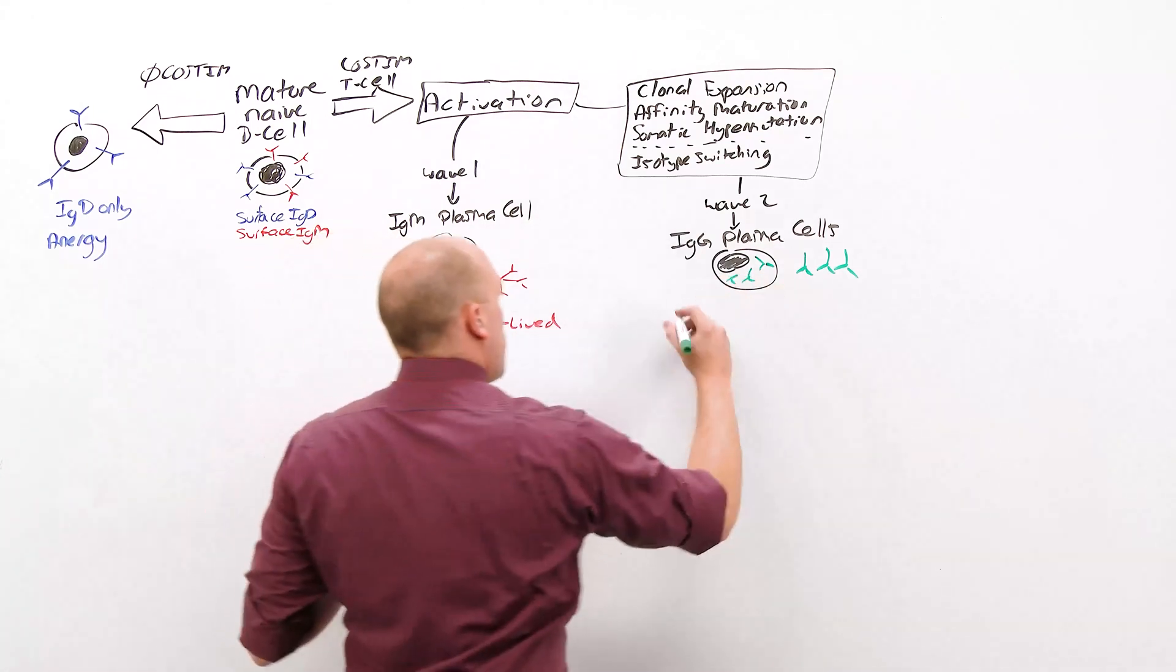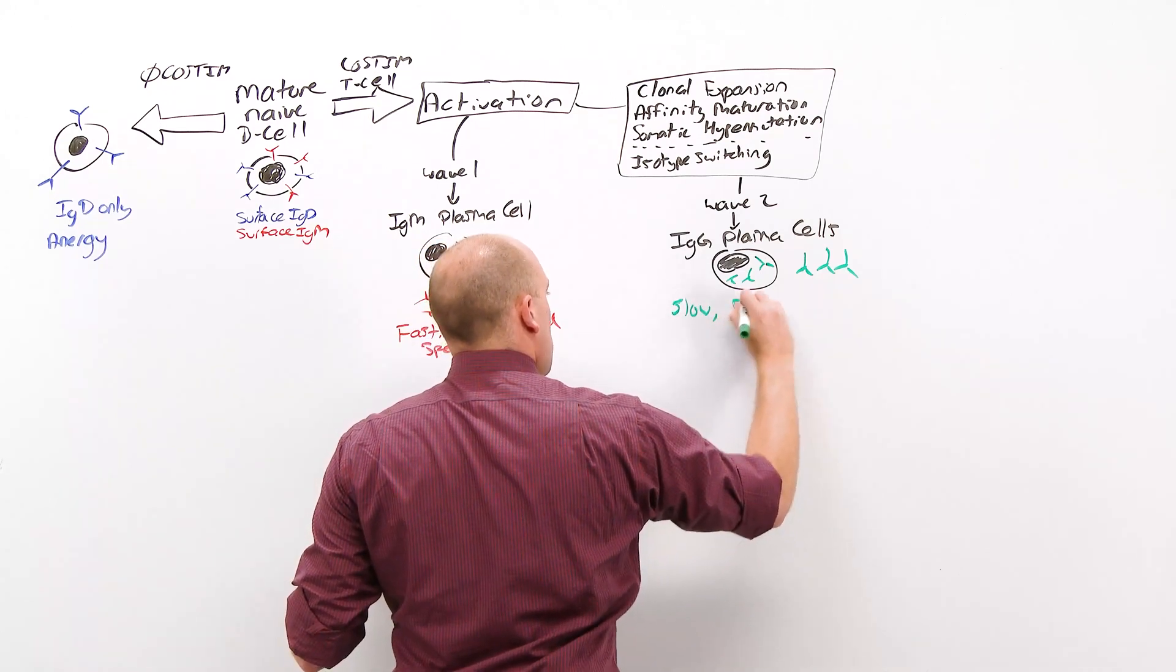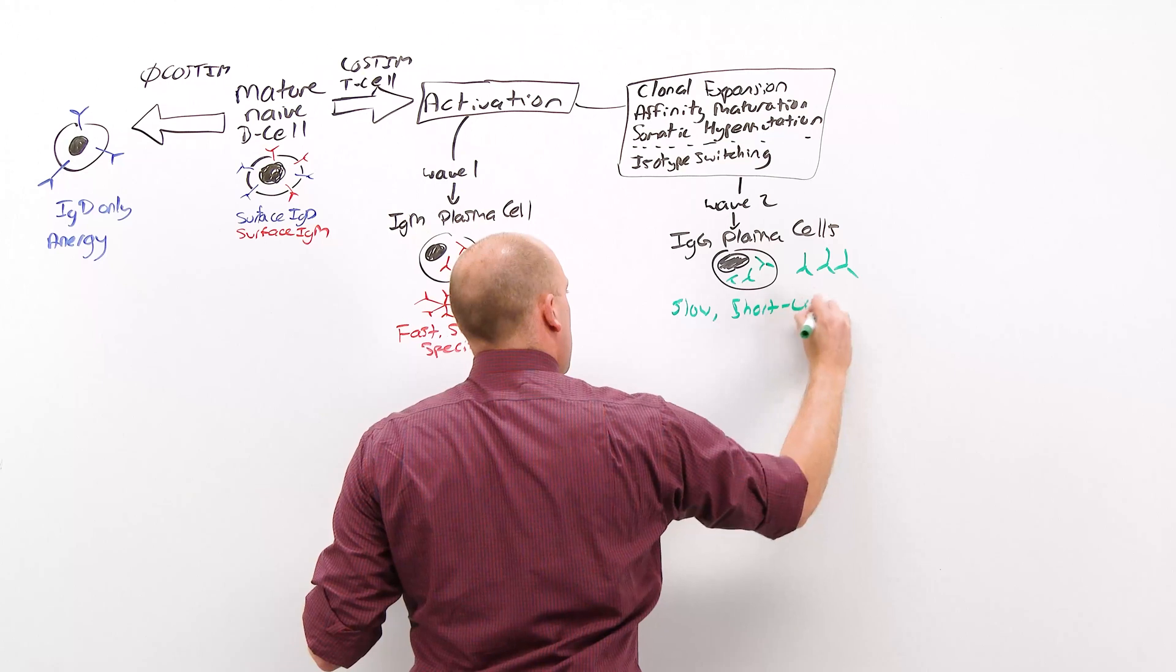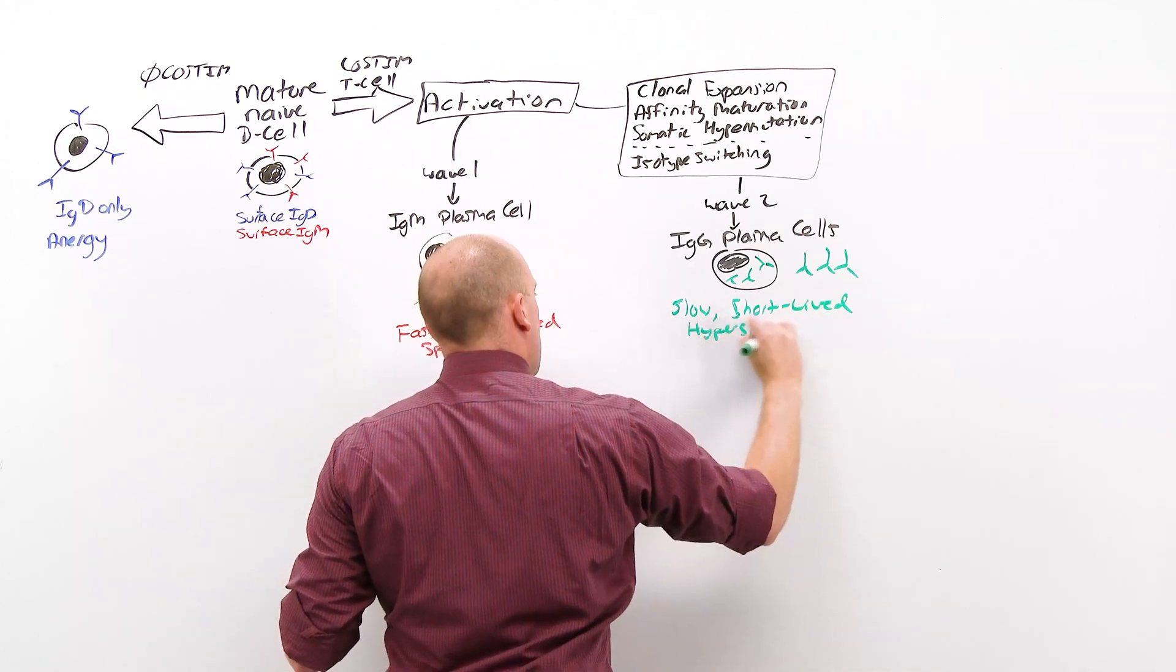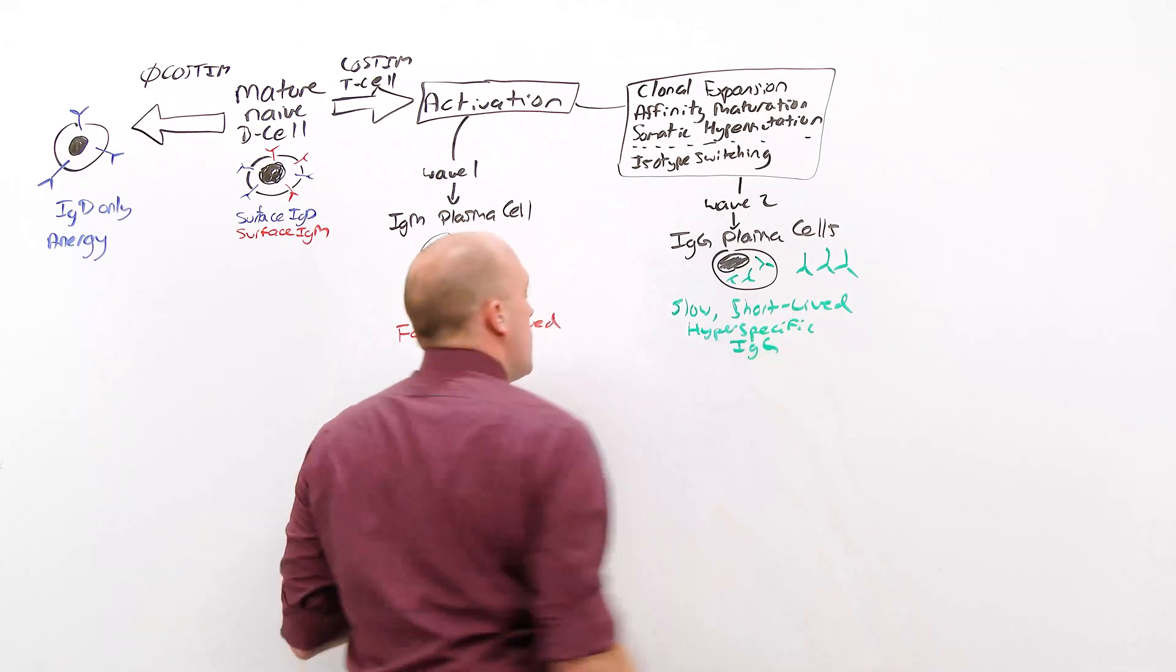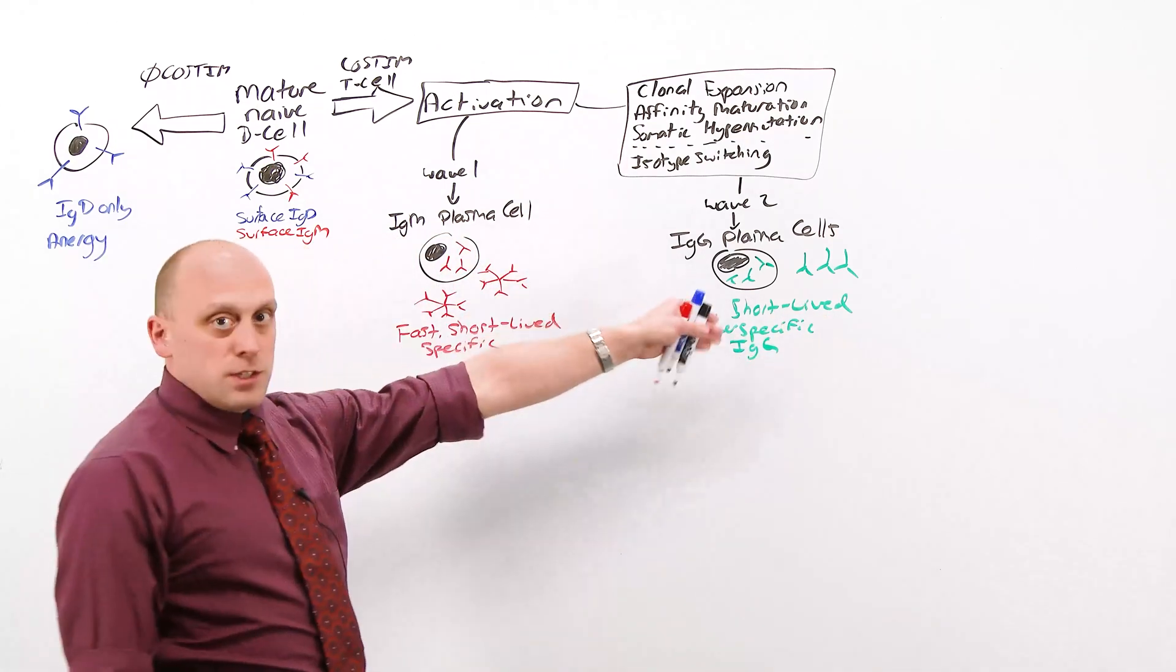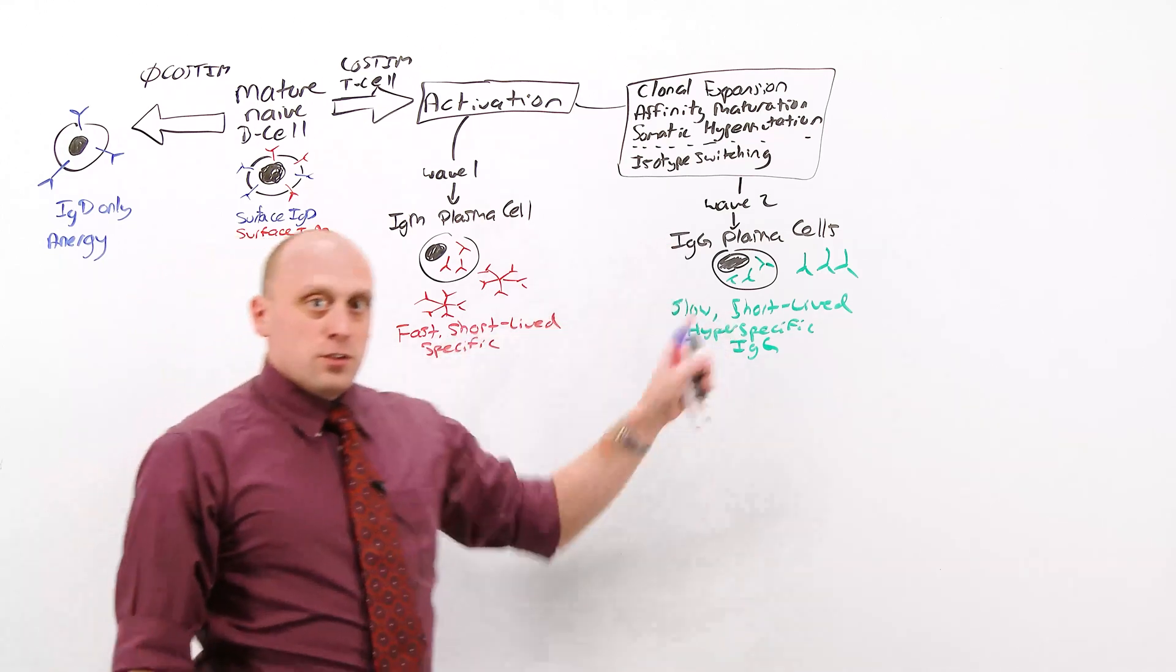This process, upon initial exposure, is slow and is also short-lived, but it is hyperspecific, and it's IgG. At the same time, these plasma cells don't need to be along very long. They need to be around only until the infection is cleared.